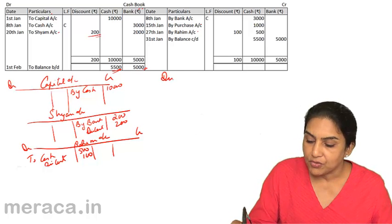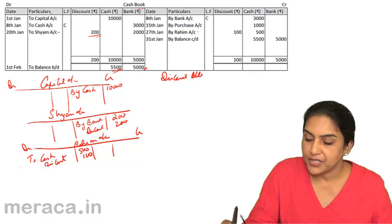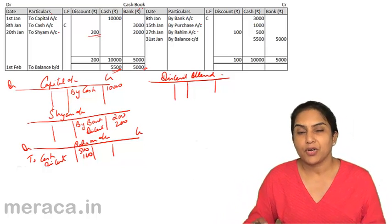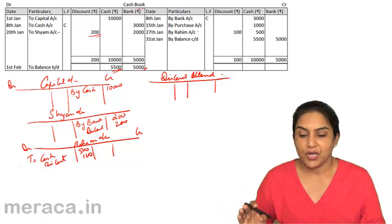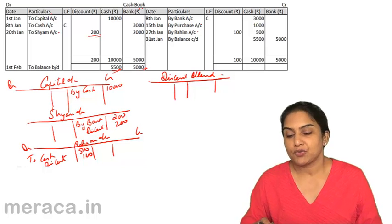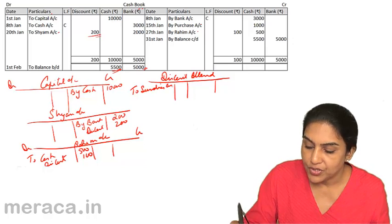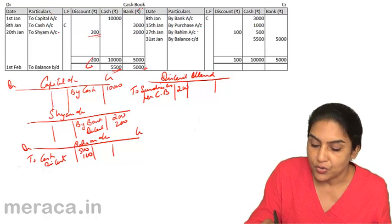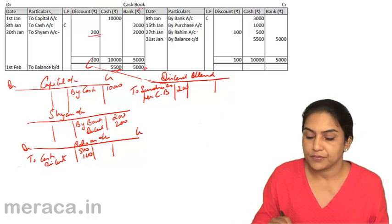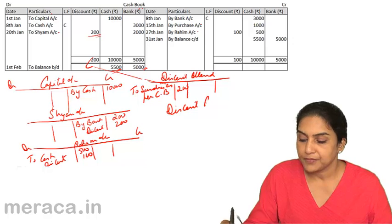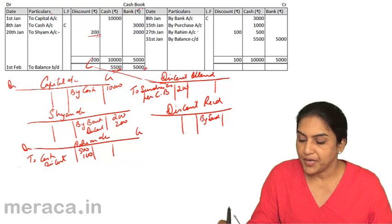The total of the discount column: sometimes accounts have both a discount allowed and a discount received account; others have one discount account. Discount received is posted to the credit side; discount allowed is posted to the debit side. Discount allowed is 200, so we write 200 as per cash book. Similarly, if we make a discount received account, we write 'By Sundries as per cash book,' and the total is 100.